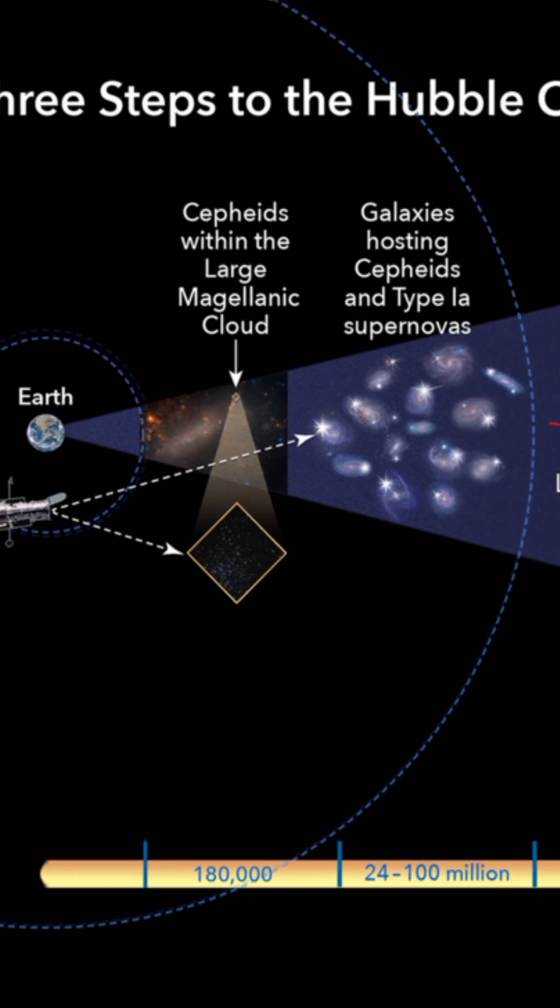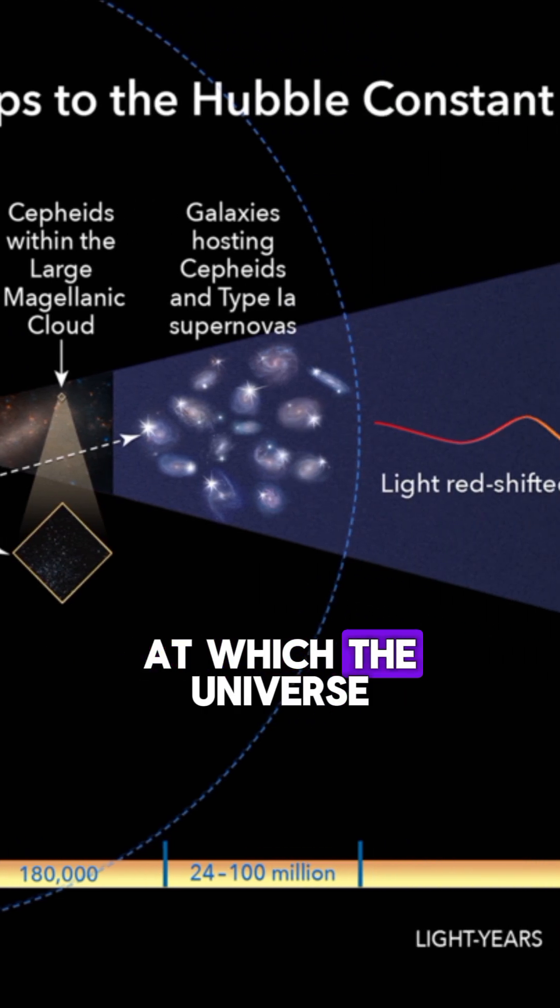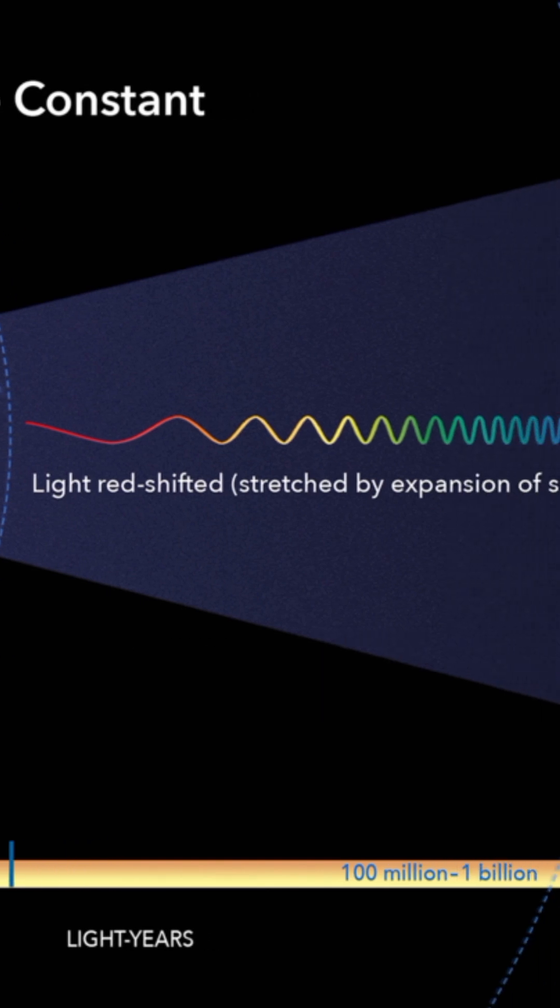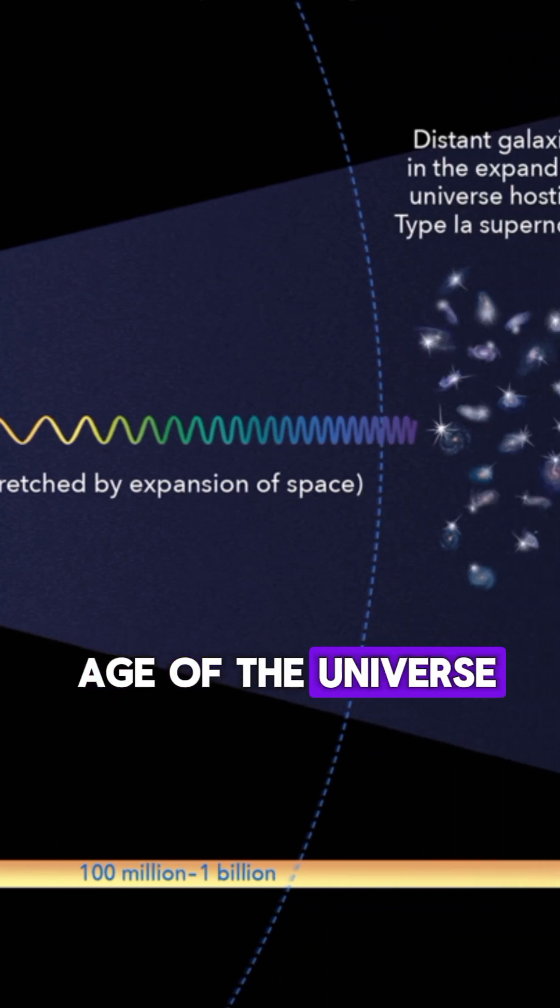Measurement of the Hubble Constant. It reflects the rate at which the universe is expanding. By measuring the Hubble Constant, scientists can calculate the age of the universe.